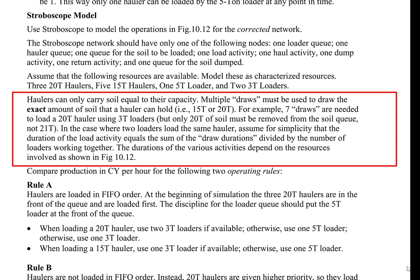For example, seven draws are needed to load a 20-ton hauler using 3-ton loaders, but only 20 tons of soil must be removed from the soil queue, not 21 tons. In the case where two loaders load the same hauler at the same time, assume for simplicity that the duration of the load activity equals the sum of the draw durations divided by the number of loaders working together.